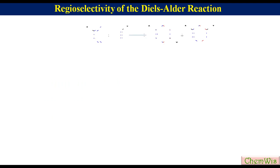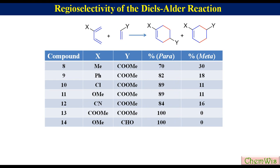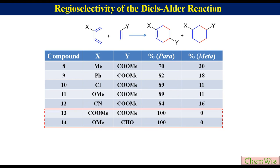For the clarification of the second point, let's look at another table. In this case too, we can see that irrespective of the nature of the substituents, the para adduct is the major adduct. In some cases, like examples 13 and 14, the meta adduct could not even be detected.